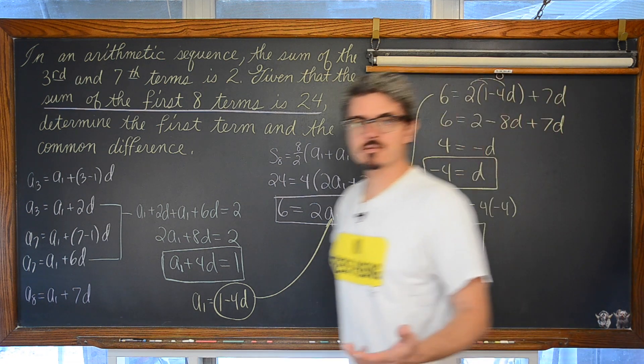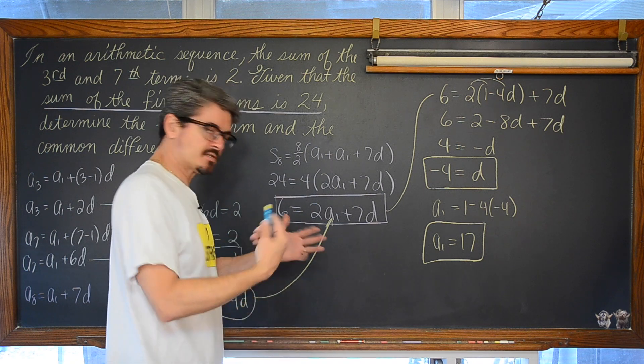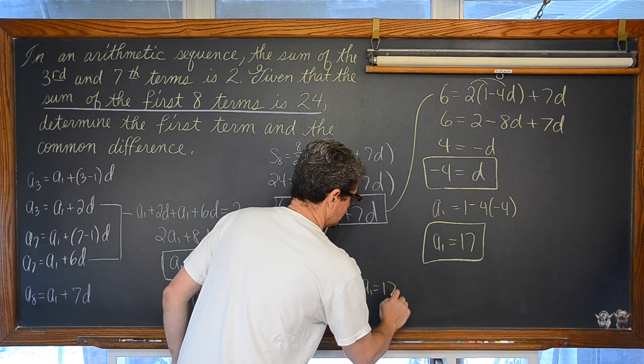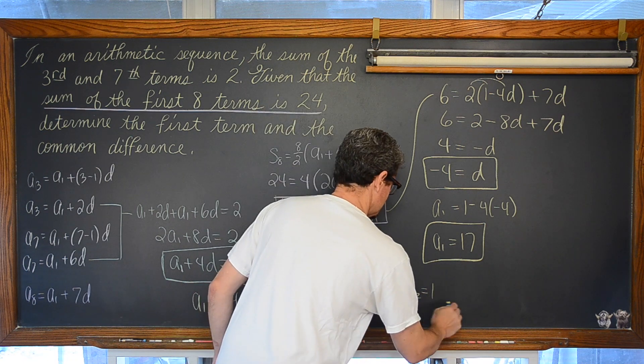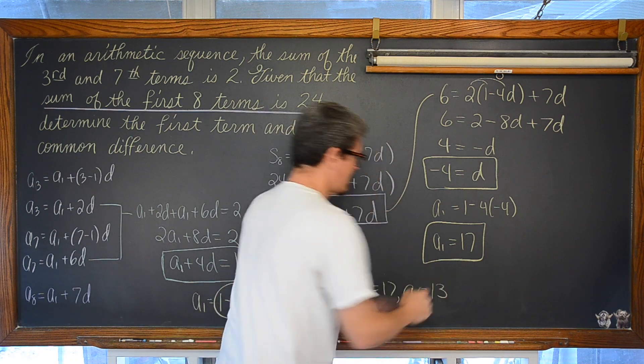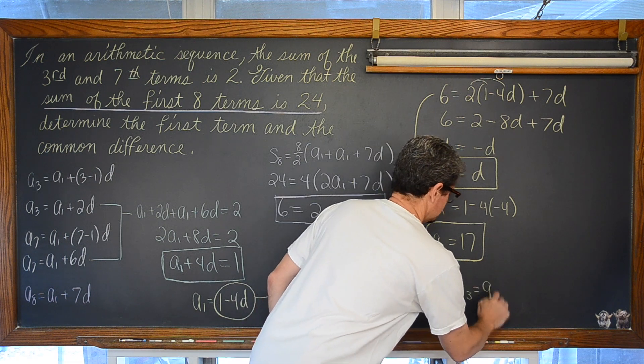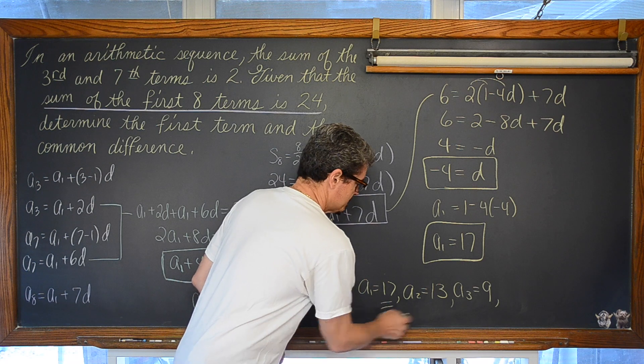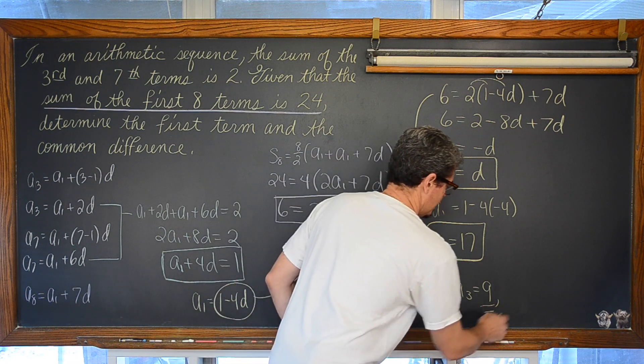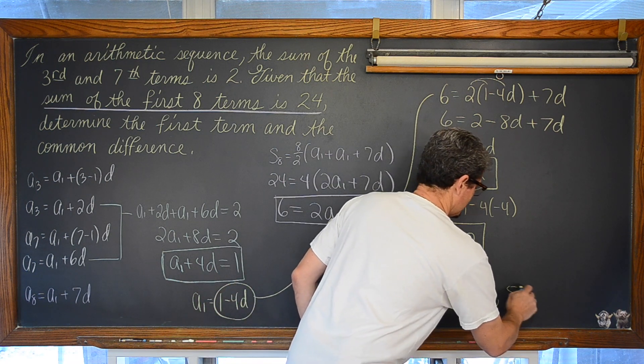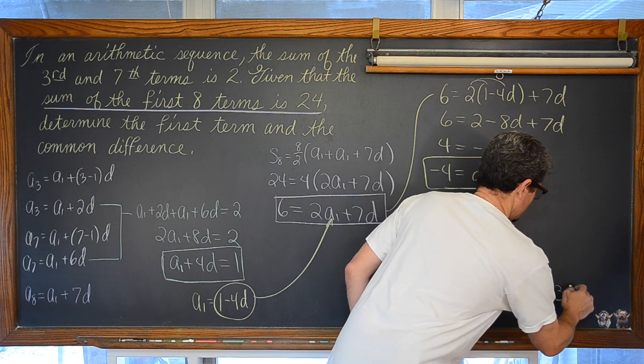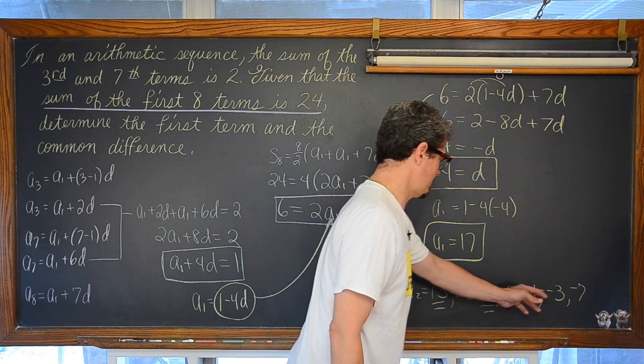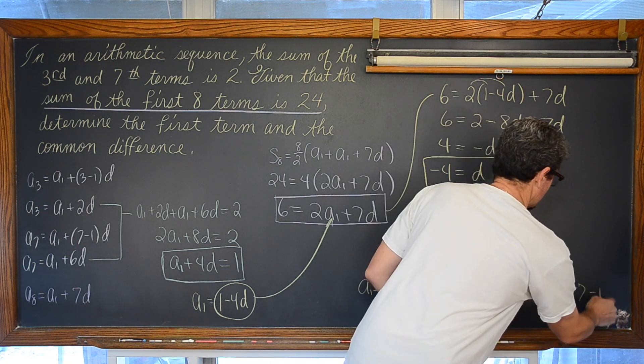Now if you want to double check this, it is really simple. You just start listing off and creating those terms. a sub 1 is 17. a sub 2 is 13 because you are subtracting by 4. We have 17, 13, 9, 5, 1, negative 3, negative 7, negative 11.